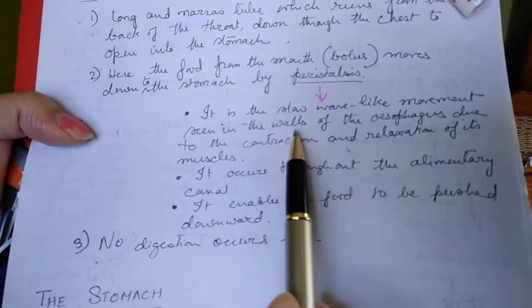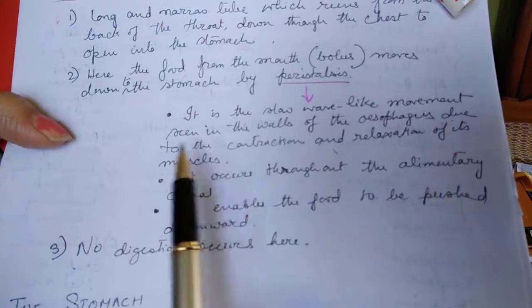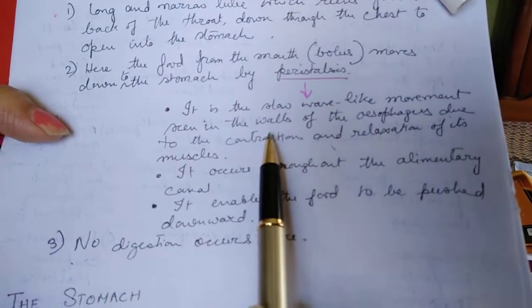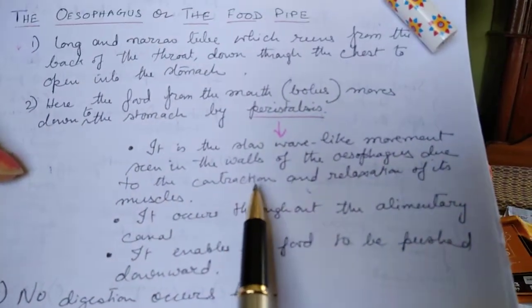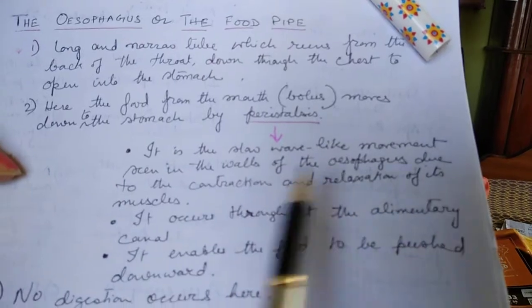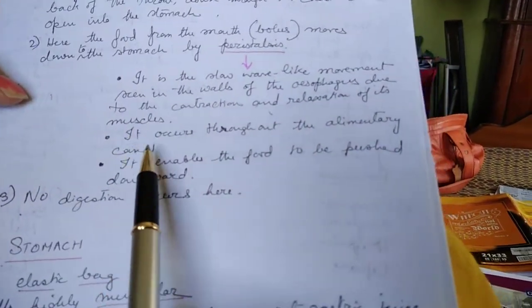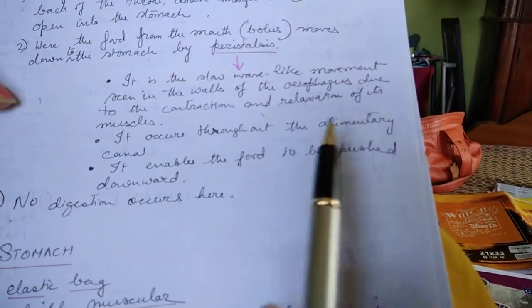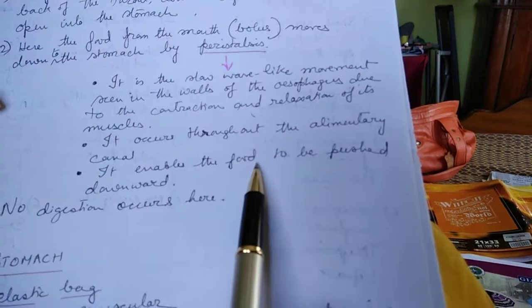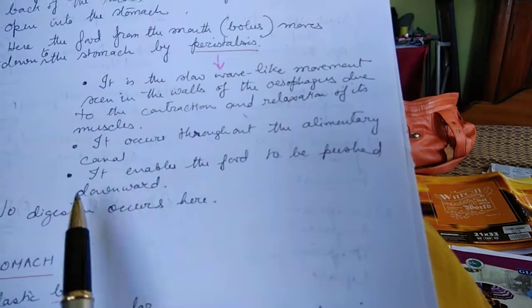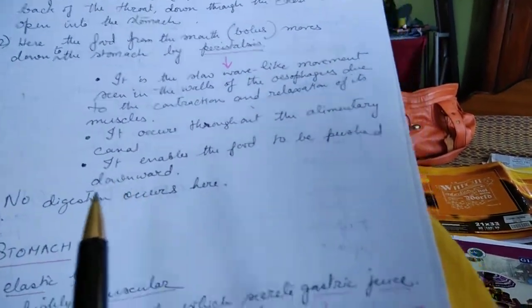Peristalsis is a slow wave-like movement seen in the walls of the esophagus, caused by the contraction and relaxation of the muscles. It occurs throughout the alimentary canal and enables the food to be pushed downward. No digestion occurs in the esophagus.